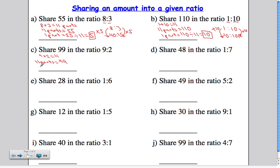Next step, work out one part. One part must be equal to 99 divided by 11. 99 divided by 11 is 9. And this is the important number. That's what one part represents.